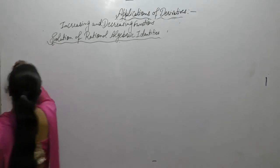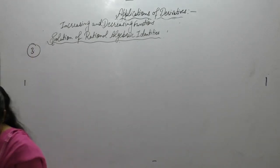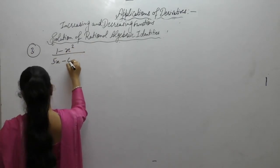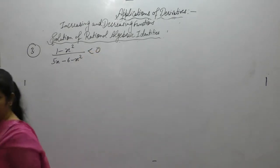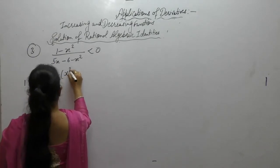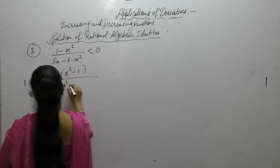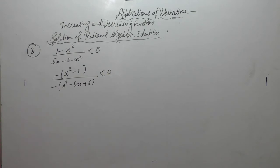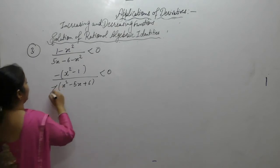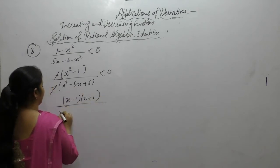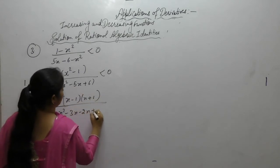Now the third problem: solve (1 minus x²) over (5x minus 6 minus x²) less than 0. First take negative common to get (x² minus 1) over (x² minus 5x plus 6) less than 0. The negatives cancel. Factorizing: numerator gives (x minus 1)(x plus 1), denominator factors as (x minus 3)(x minus 2).